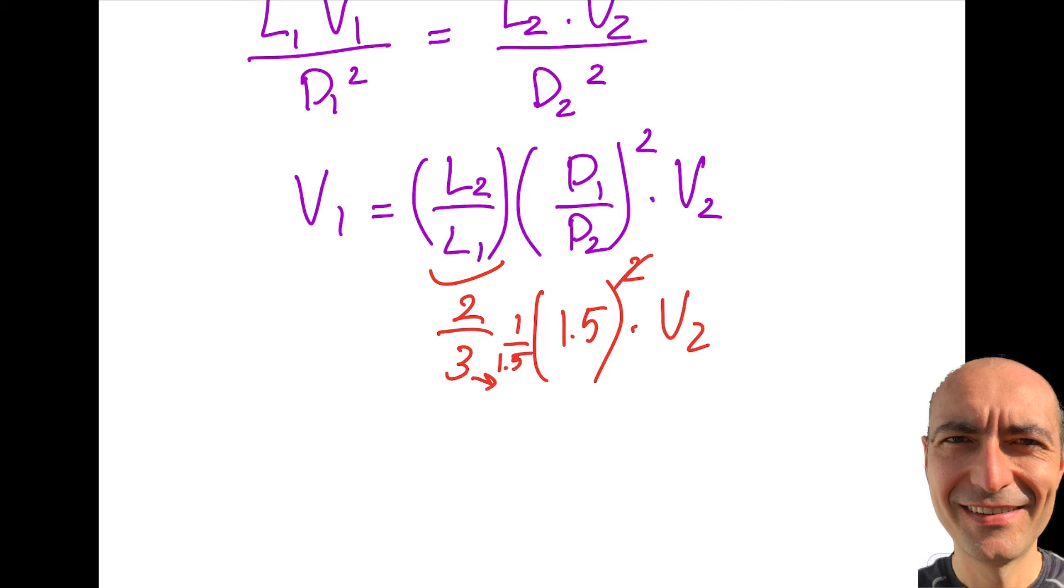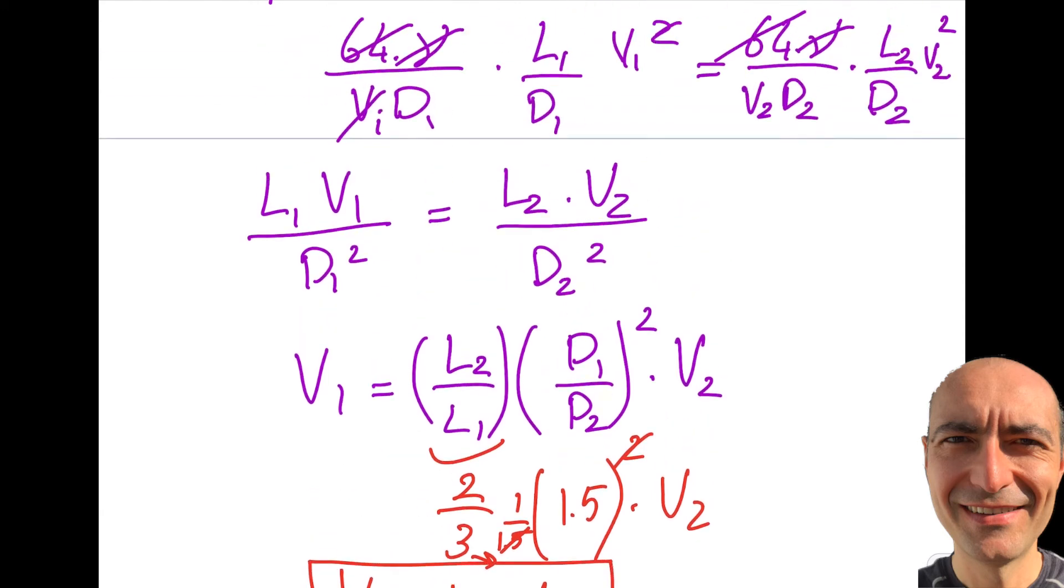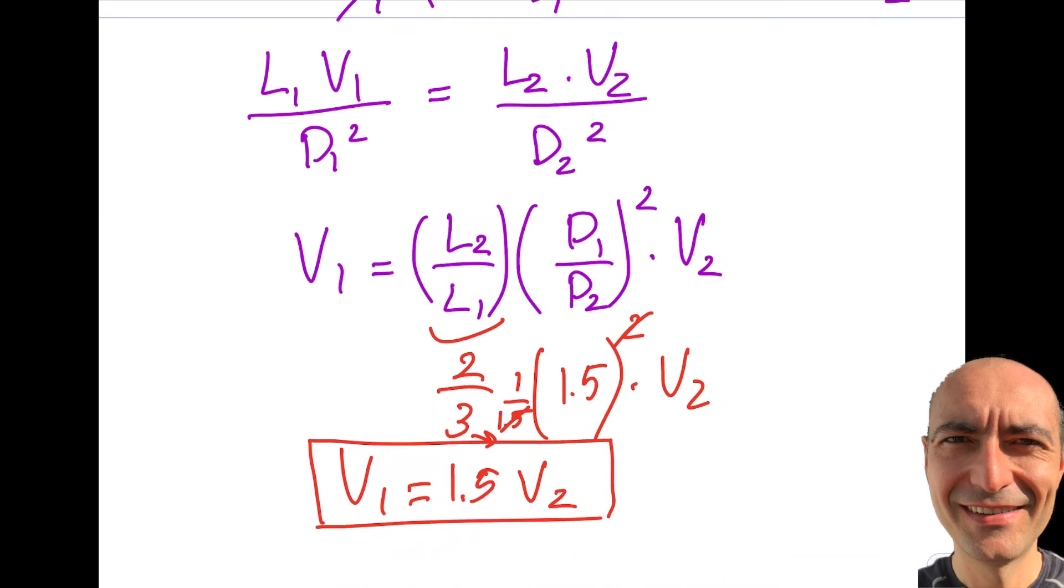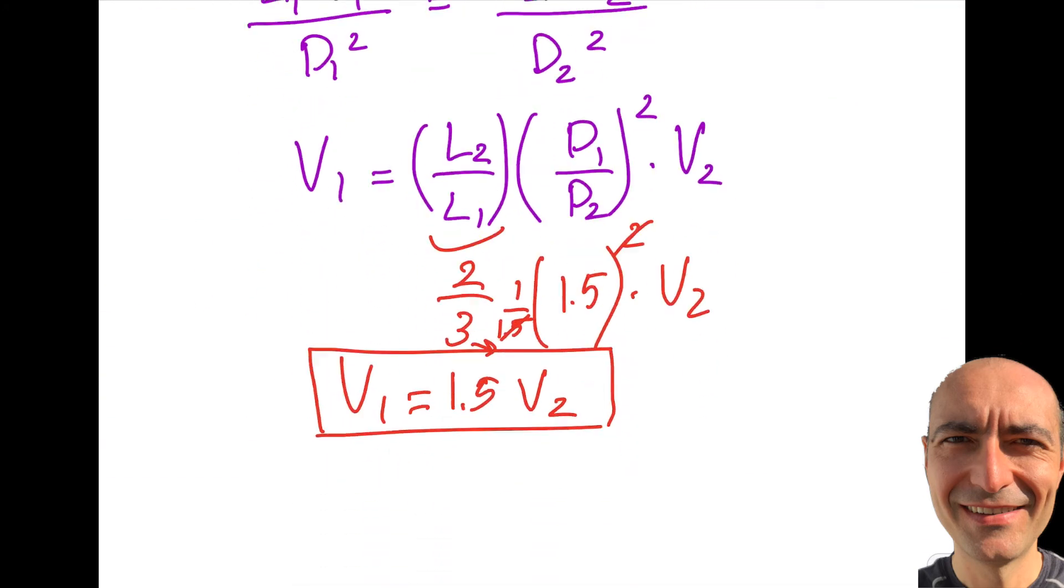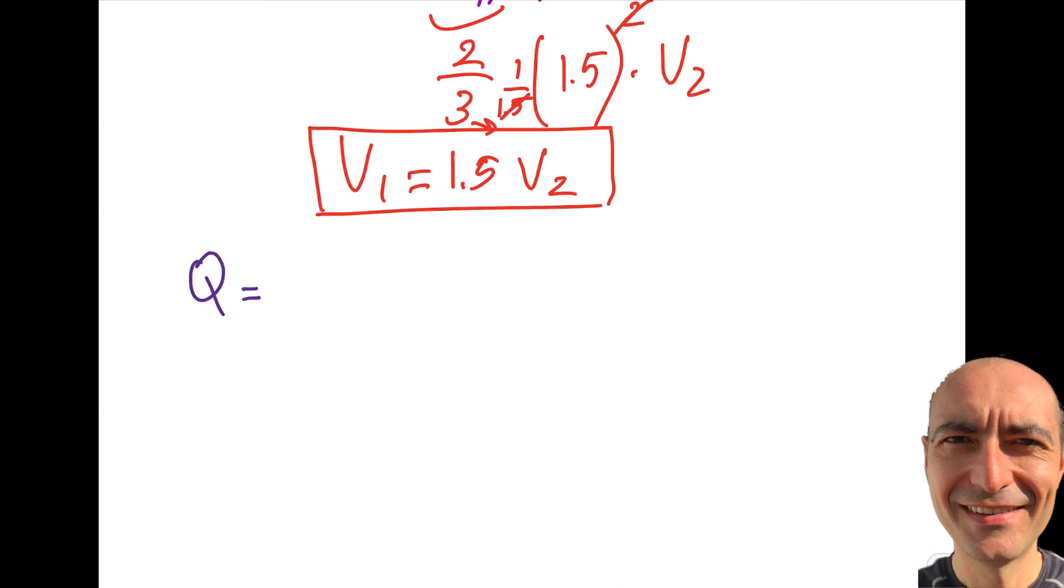I can cancel this and I get myself V1 is equal to 1.5 times V2. Okay, so this is great news. V1 is 1.5 V2, so if I come over here I'm going to insert this to be 1.5 V2.